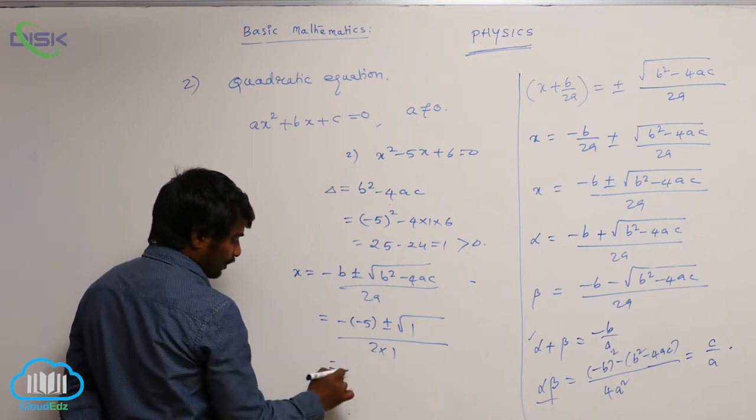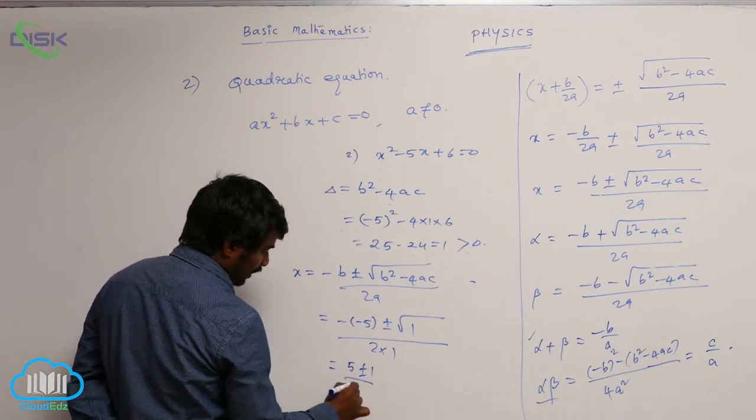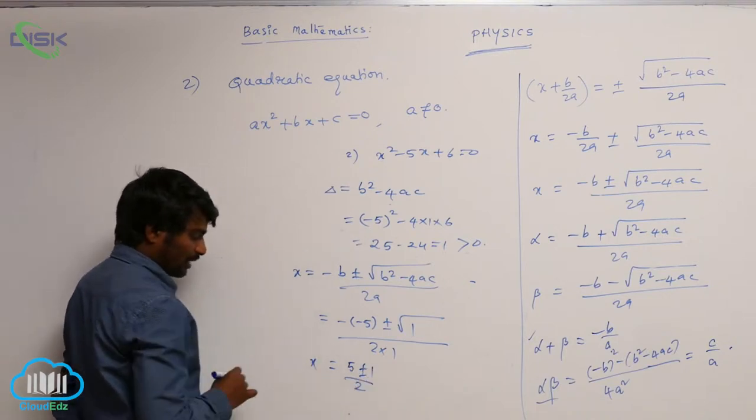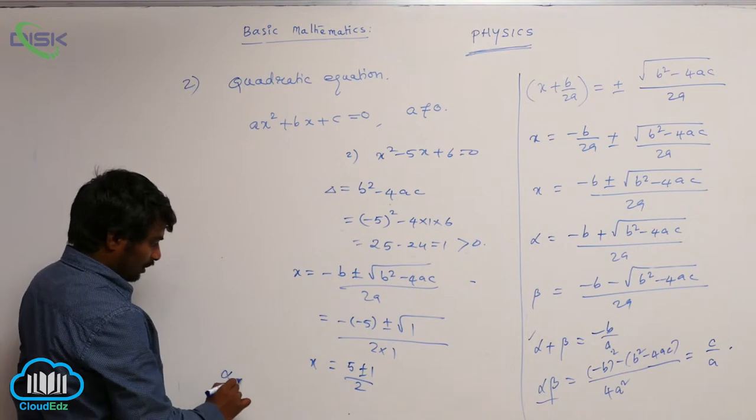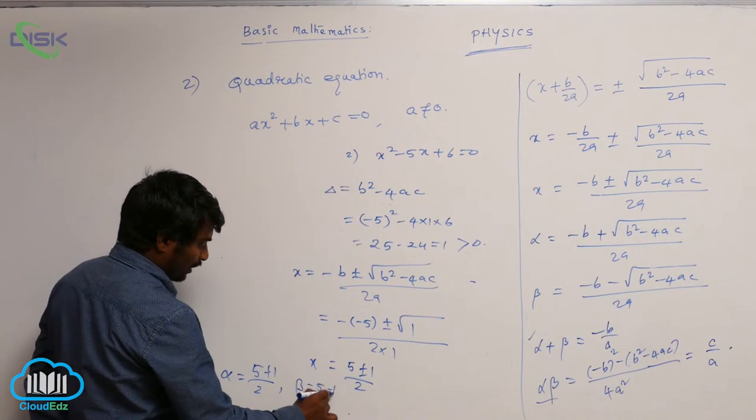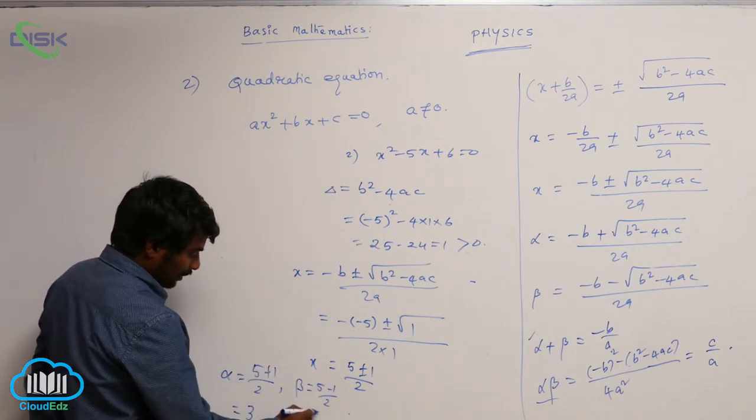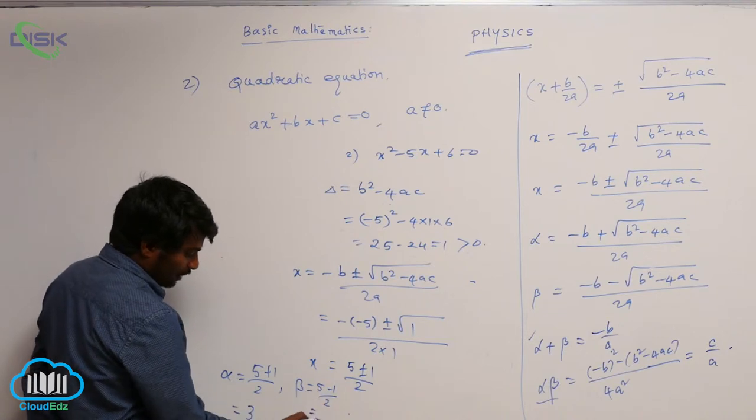So what you are going to get? Minus into minus plus plus or minus 1 by 2. So two roots again alpha is equal to 5 plus 1 by 2 and beta is equal to 5 minus 1 by 2. 6 by 2 is 3. Here 4 by 2 is 2.